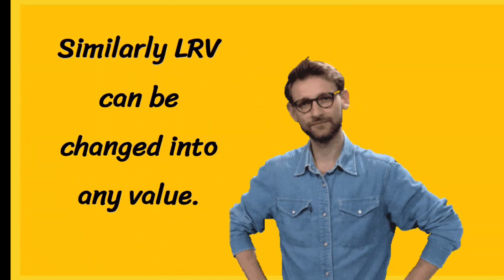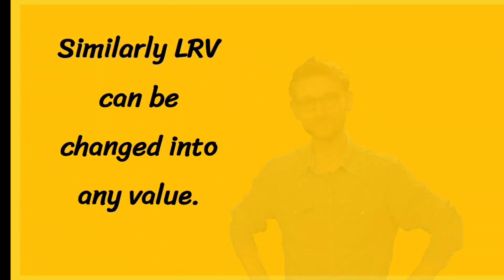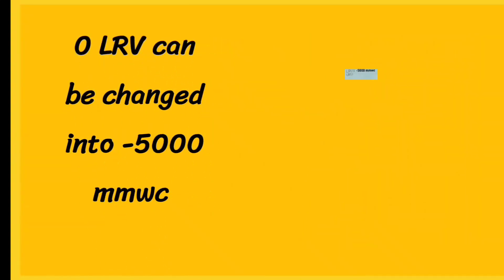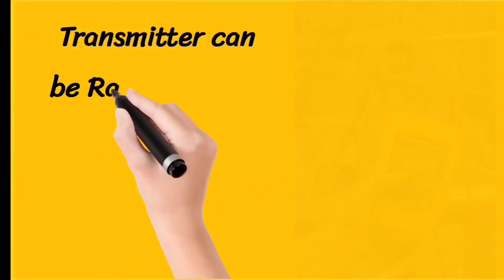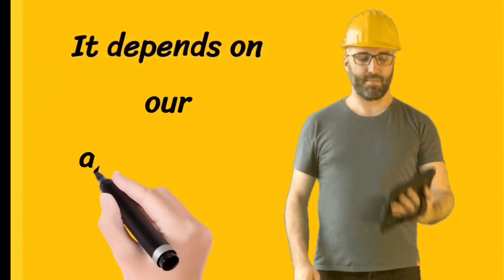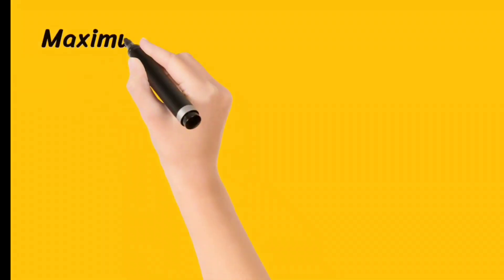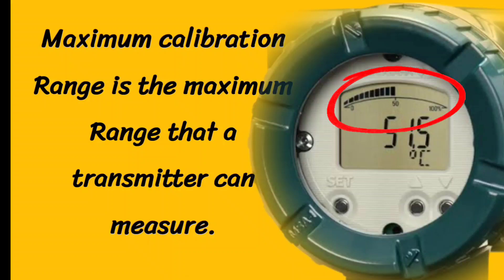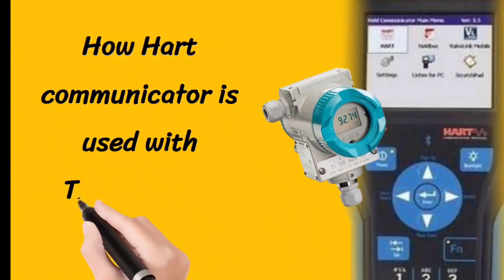Similarly, LRV can also be changed into any value. For example, 0 LRV can be changed into minus 5,000 mm WC. One important point to note is that a transmitter can be ranged within its maximum calibration range, and we can re-range transmitters according to our applications. Maximum calibration range is the maximum range that a transmitter can measure. Now we will discuss how a HART communicator is used with a transmitter.